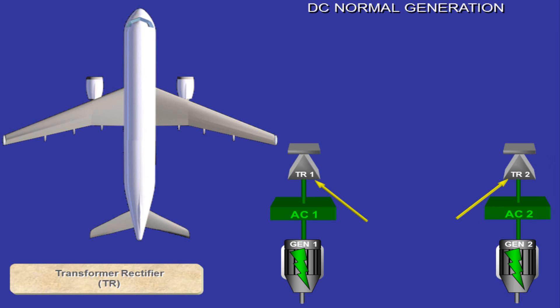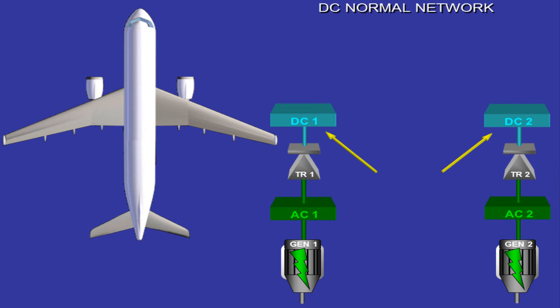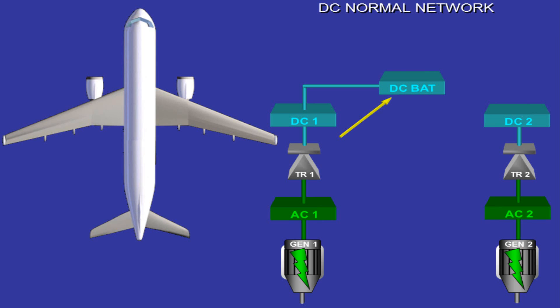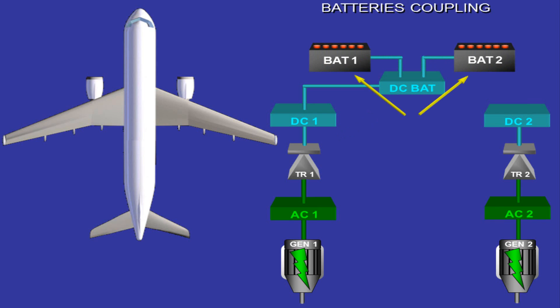Each AC bus supplies a transformer rectifier, TR. AC bus 1 supplies TR 1, and AC bus 2 supplies TR 2. The TRs convert 115 volts AC into 28 volts DC to supply their associated DC buses, DC 1 and DC 2. DC bus 1 then supplies the DC bat bus. The DC battery bus can charge the batteries or receive power from the batteries as a backup supply if no other power sources are available.